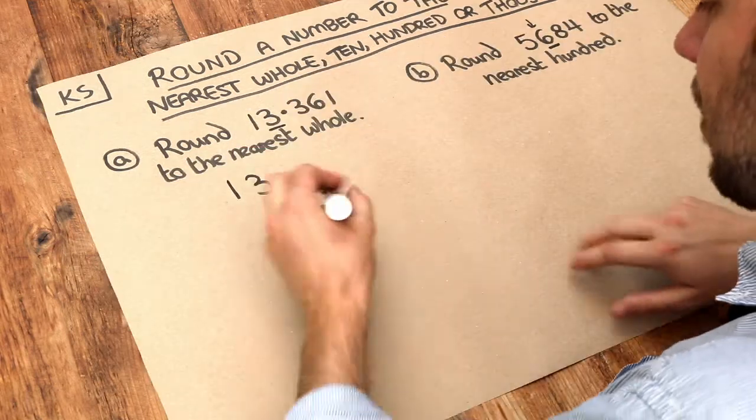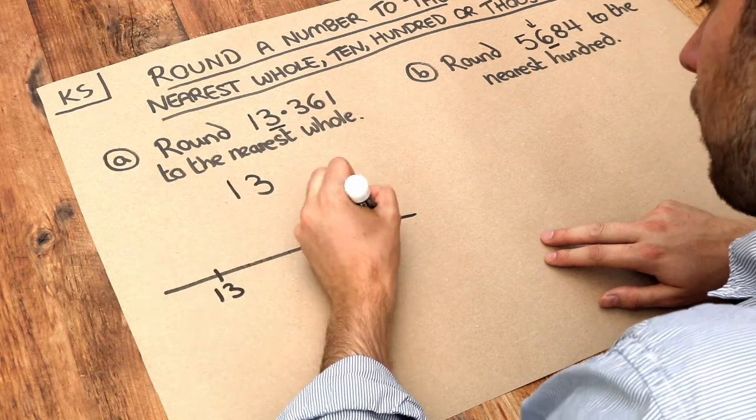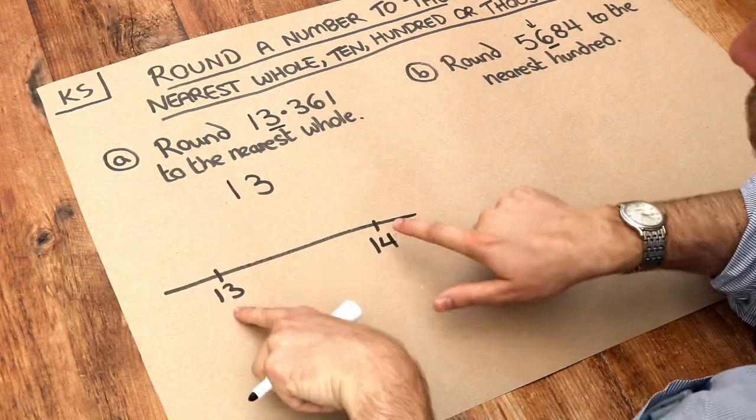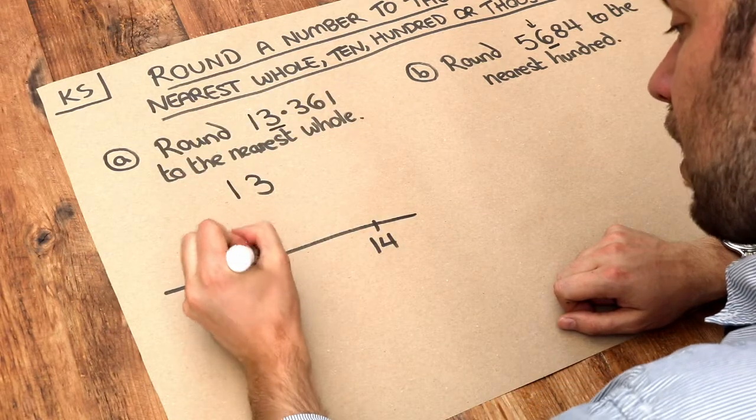If we were to represent this on a number line, we've got 13 here, and we've got 14 here, and these are whole numbers. And we've got 13.361 roughly about here.